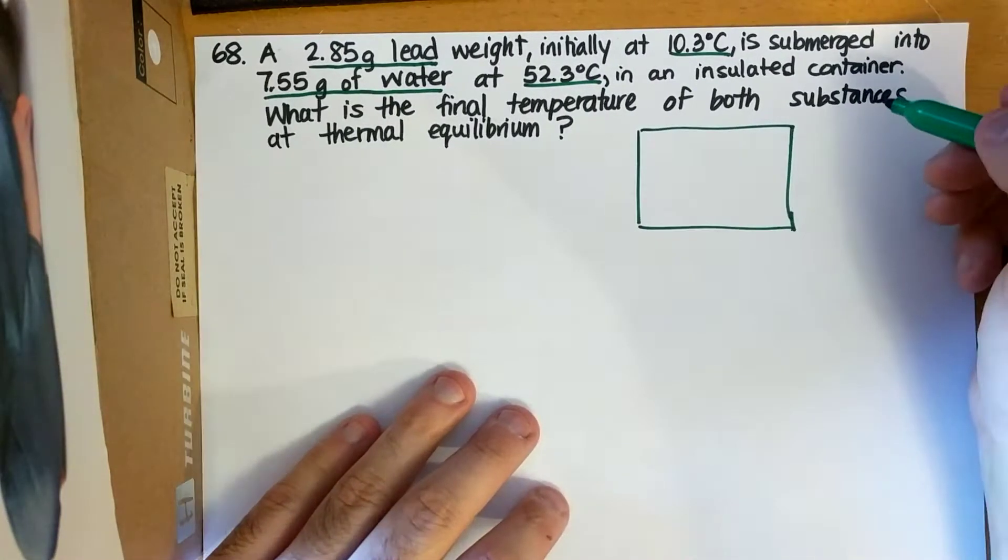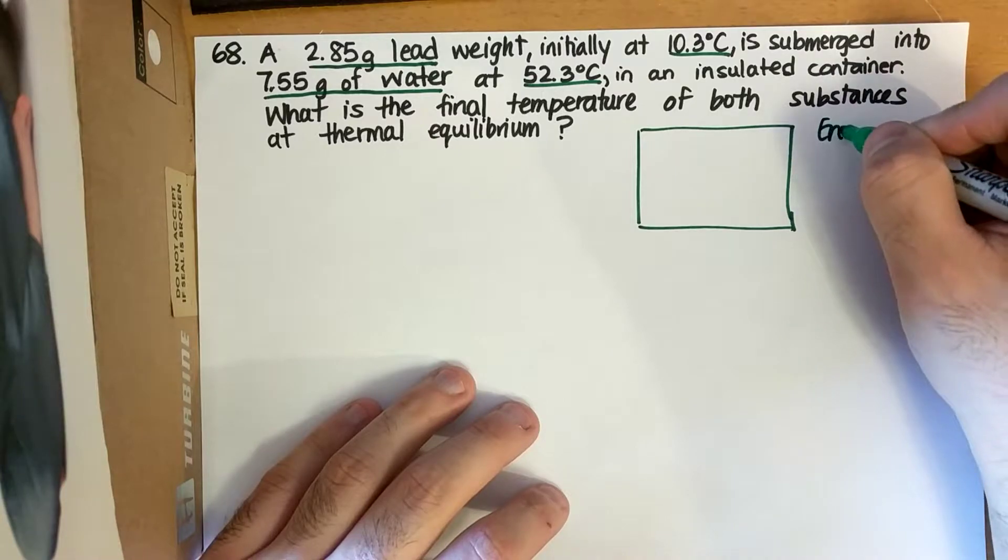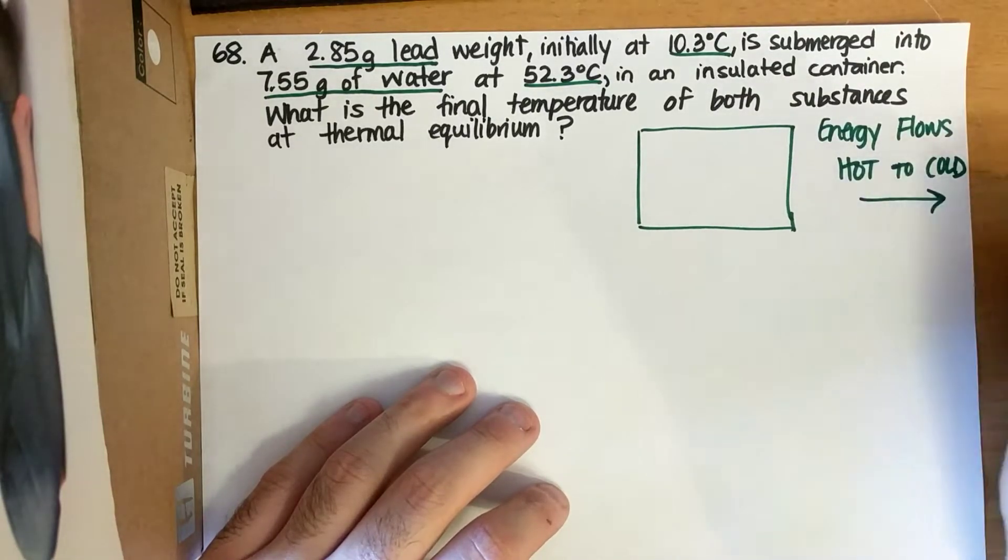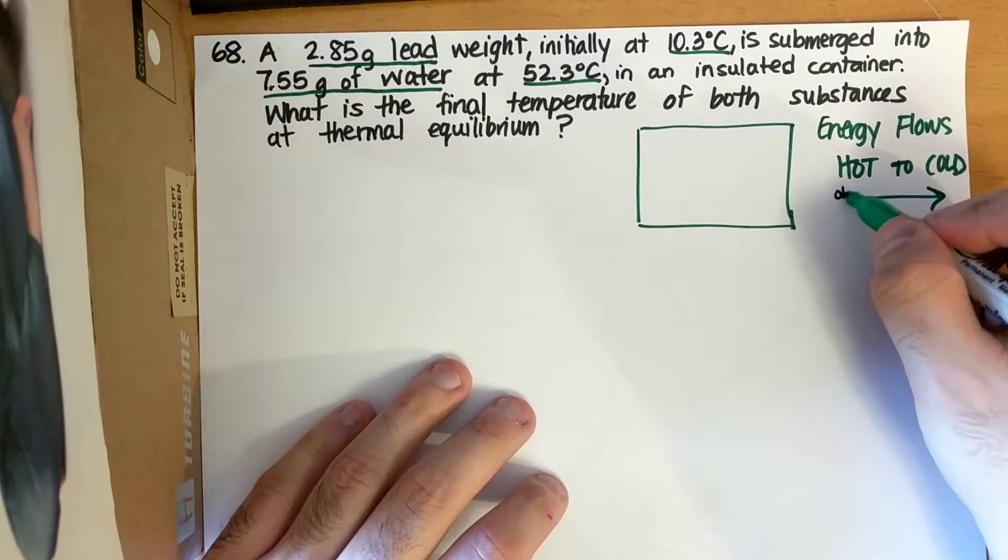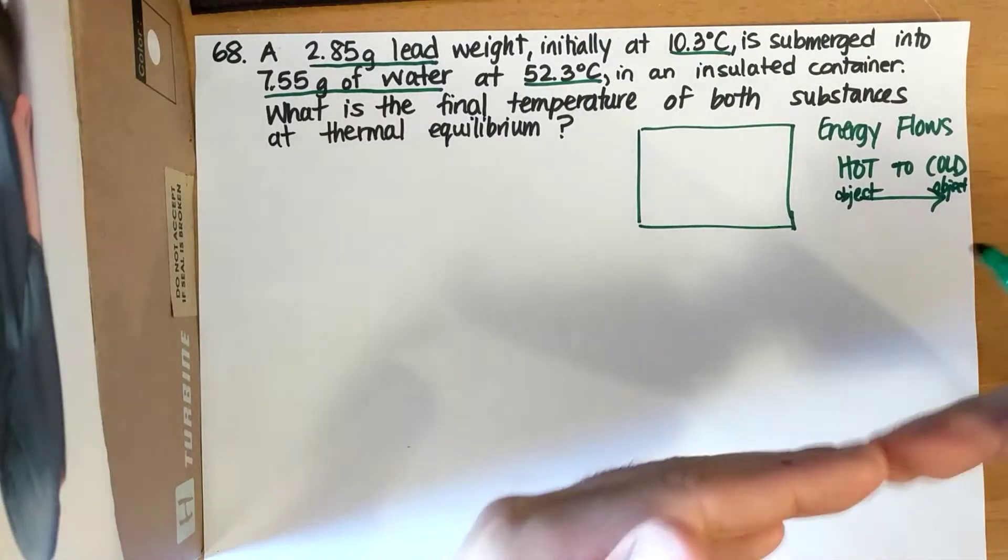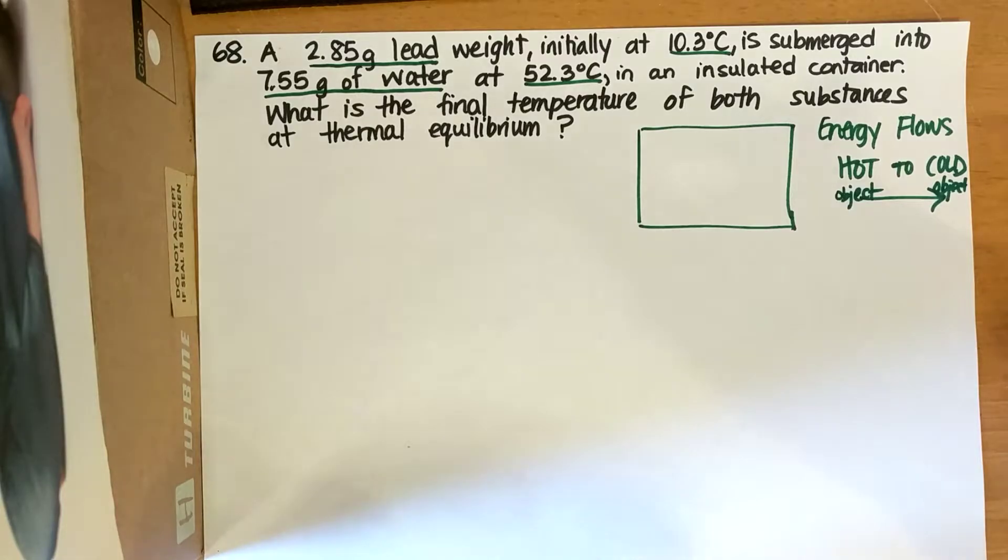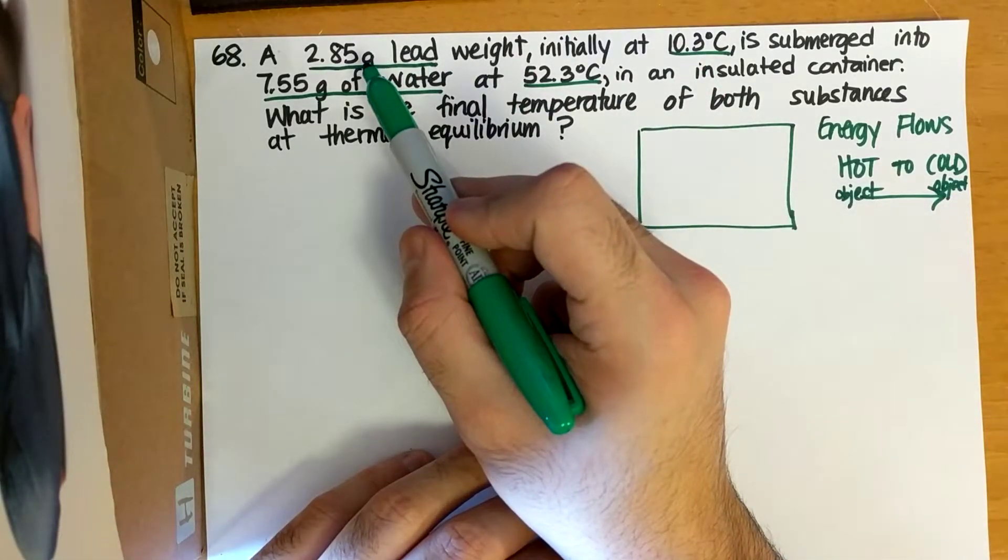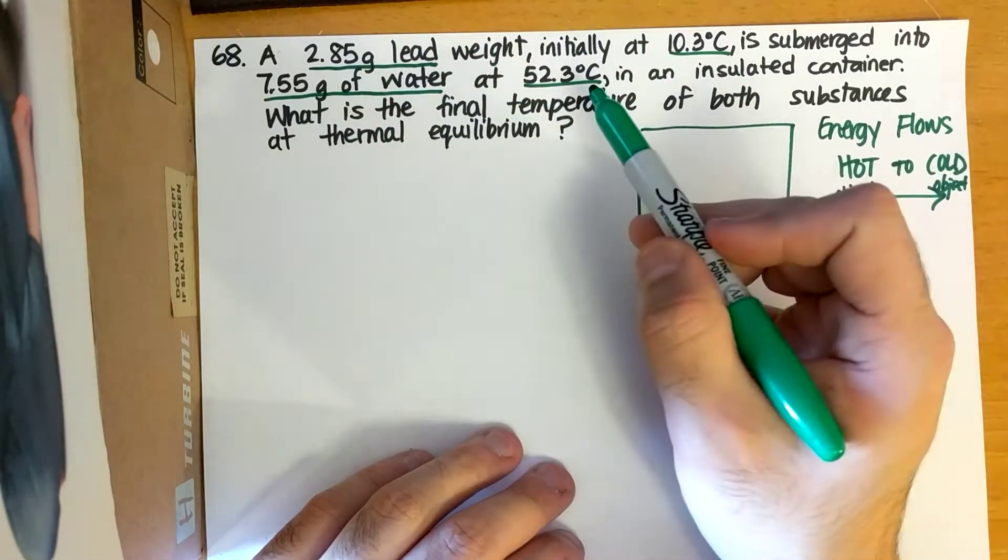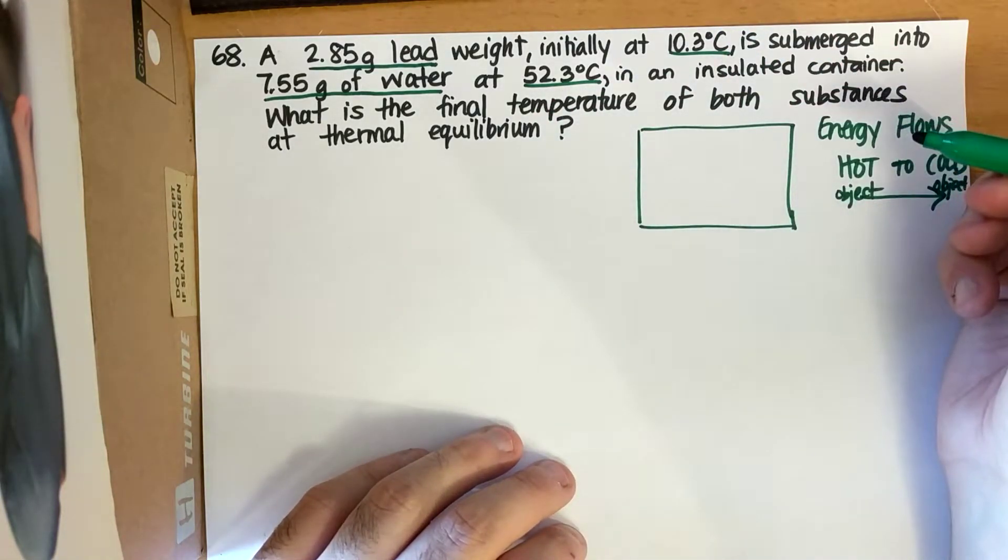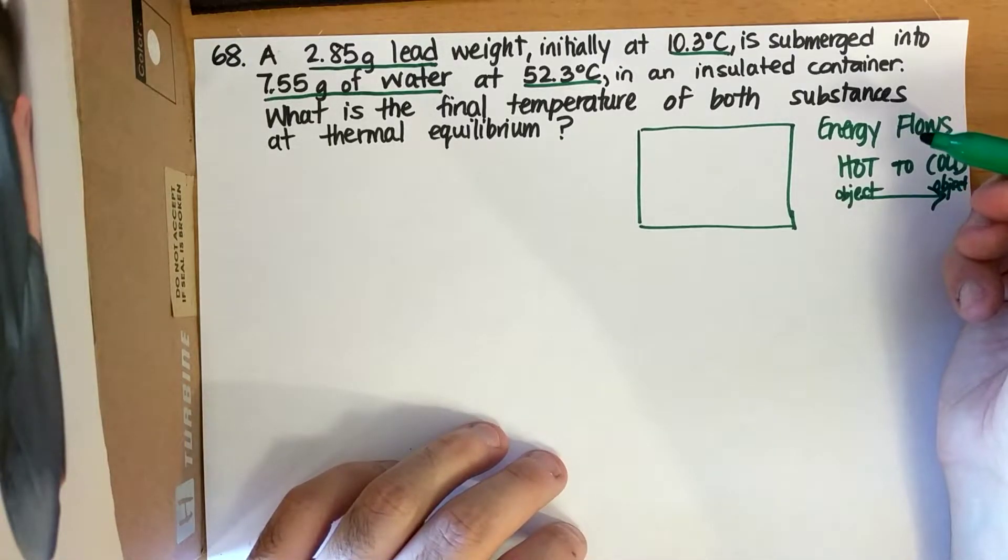Alright, so something that we need to note is that the way energy flows, it always goes from hot to cold. So if I have a hot object, the energy transfers from that hot object to the cold object to reach some middle temperature or thermal equilibrium, as we'll call it. So in both these cases, I have lead, which is 10.3 degrees Celsius, and water, which is 52.3 degrees Celsius. Between these two, I know my water is going to be my warmer portion of this.